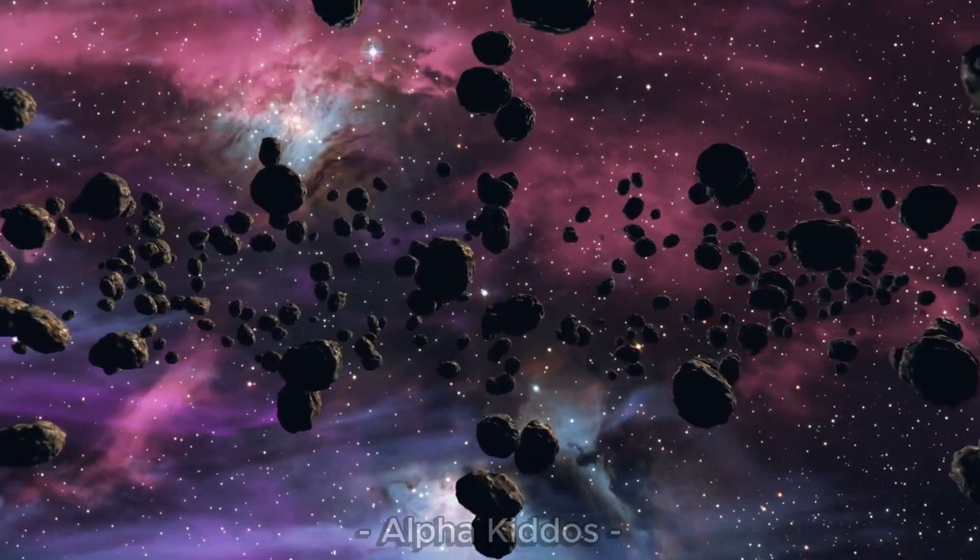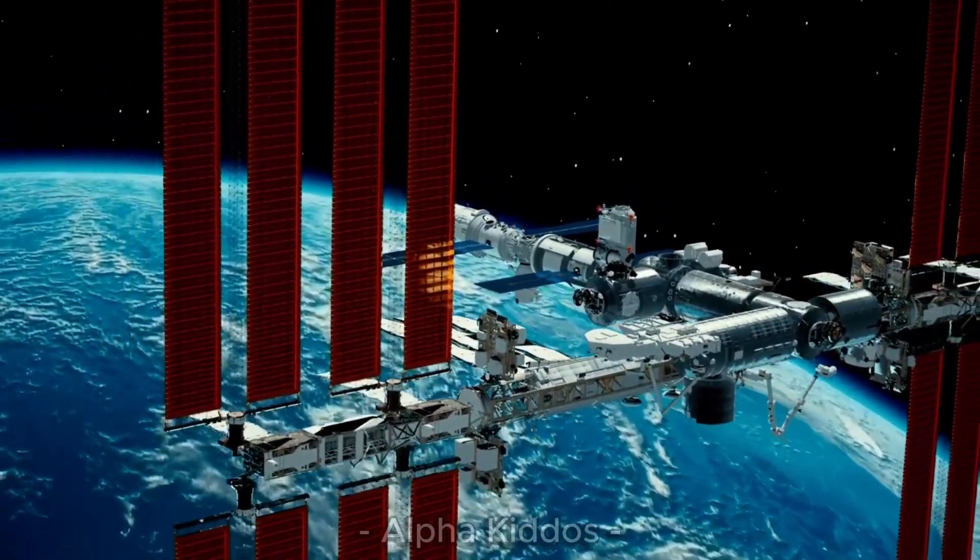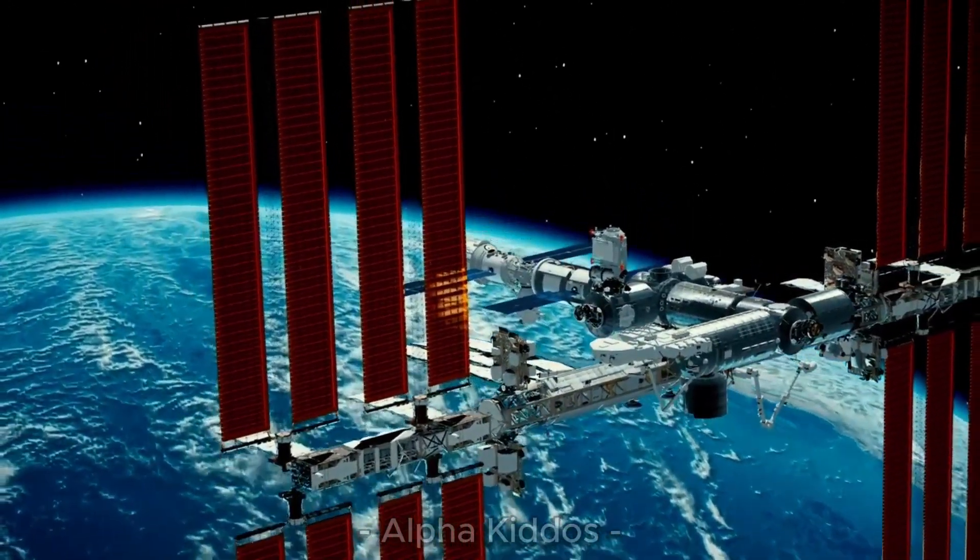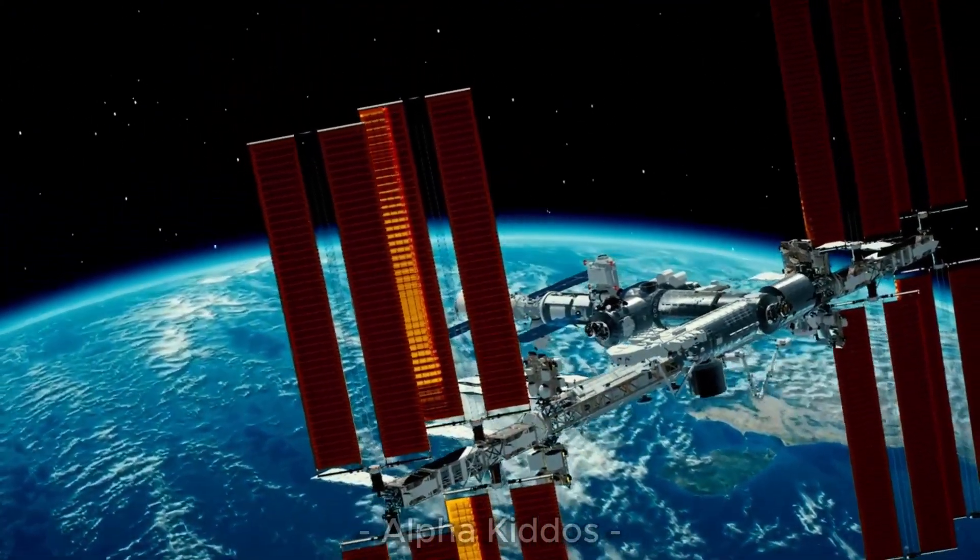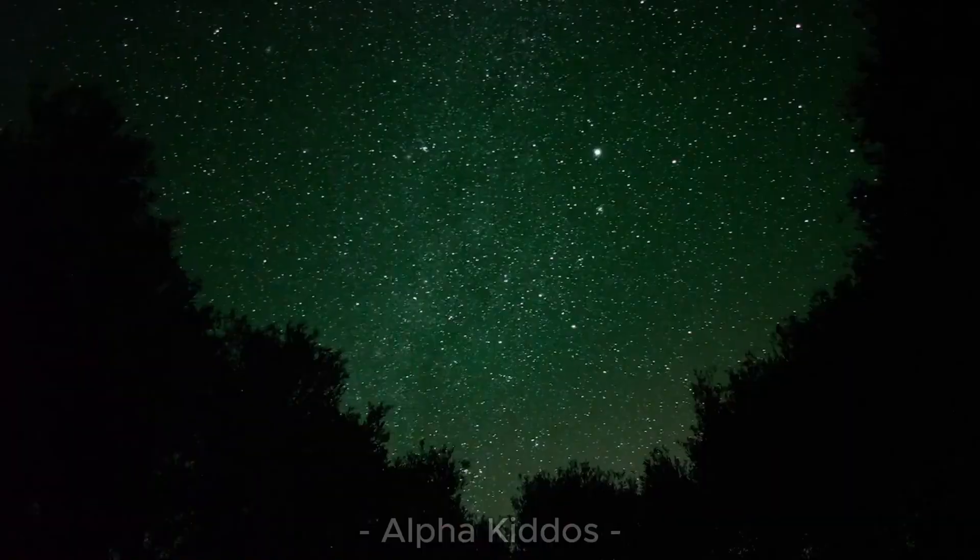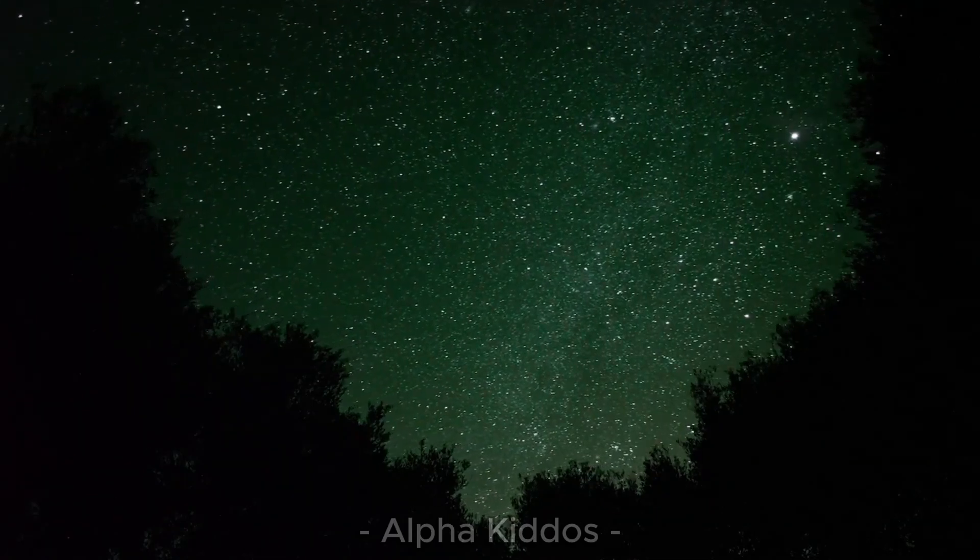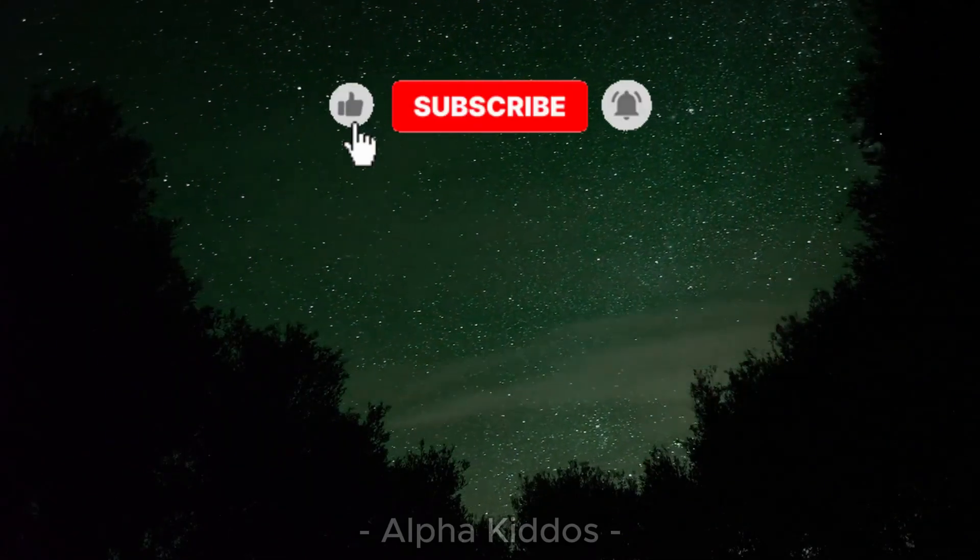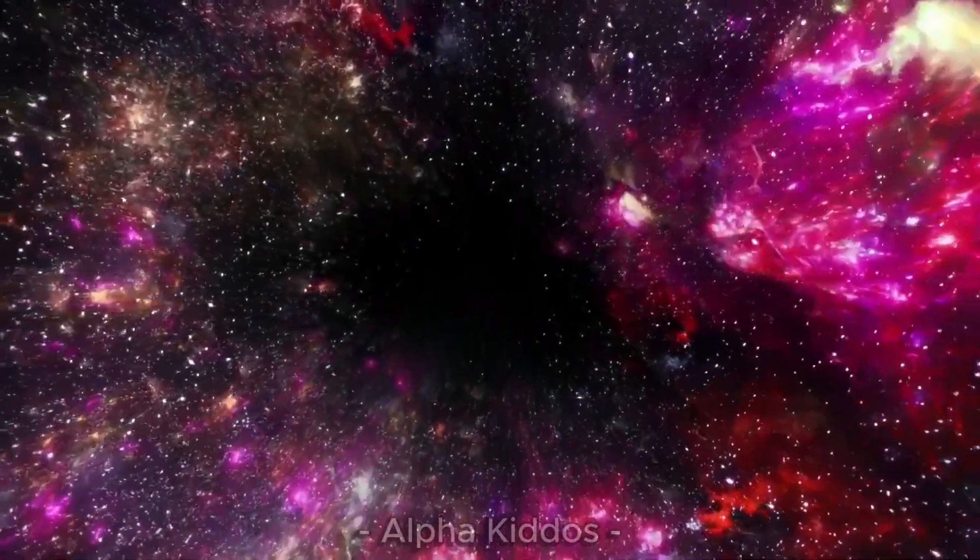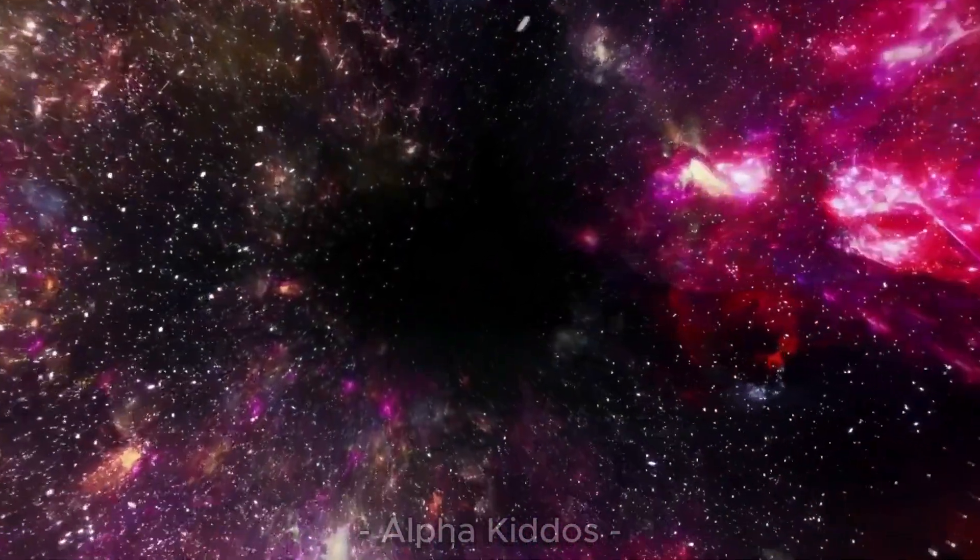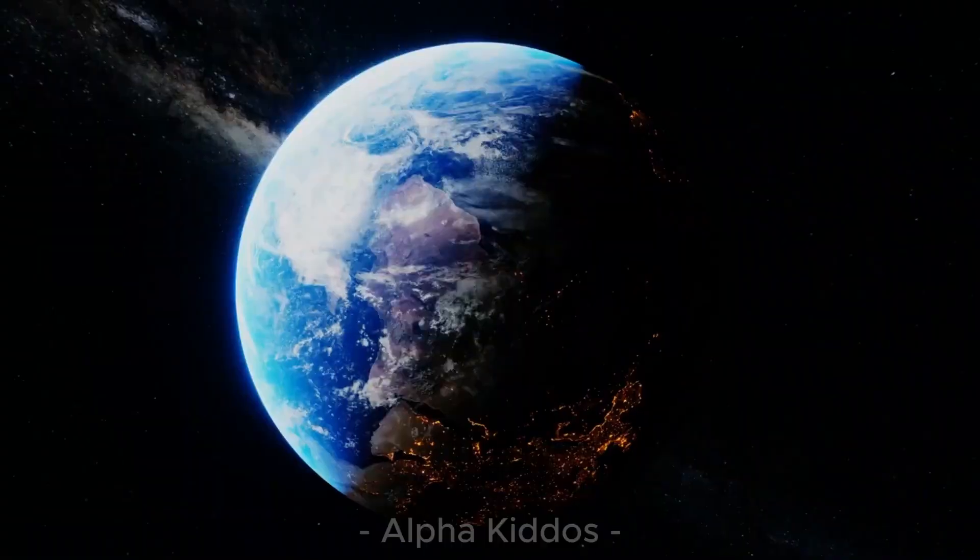Wow kids, that was super fun! Today we learned so many things about the planets in our solar system, from Mercury all the way to Neptune. Each planet has its own amazing story. Thank you for joining today's adventure with Alpha Kiddos. And don't forget, click the like button, hit subscribe, and share with your friends so more kids can learn and have fun together with us. See you in the next adventure, bye bye!